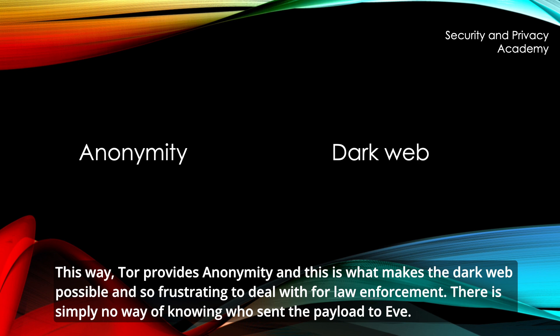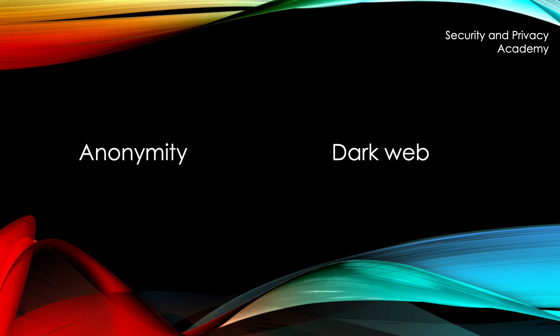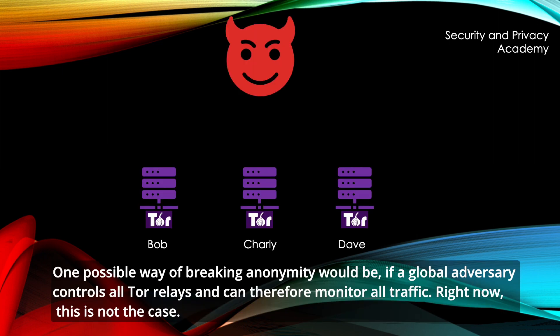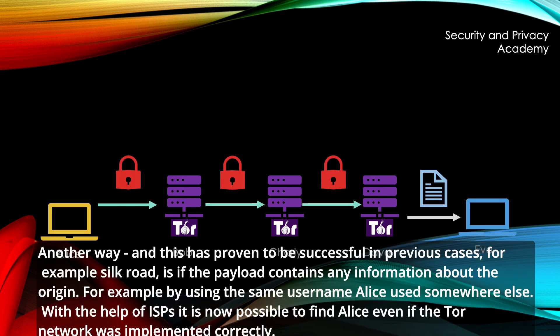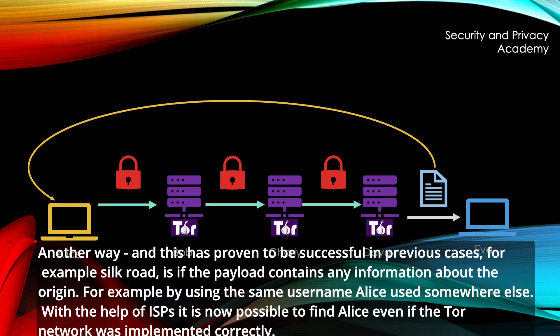There is simply no way of knowing who sent the payload to Eve. One possible way of breaking anonymity would be if a global adversary controls all TOR relays and can therefore monitor all traffic — right now, this is not the case. Another way, proven to be successful in previous cases such as Silk Road, is for the payload to contain information about the origin, for example by using the same username Alice used somewhere else. With the help of ISPs, it is then possible to find Alice even if the TOR network was implemented correctly.